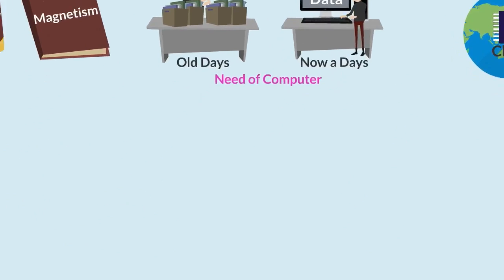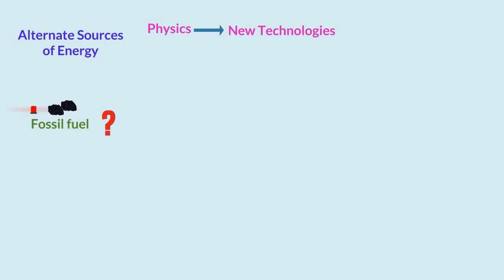Yet another example is the development of alternate sources of energy. We all know that fossil fuels will end one day. What will happen after that? From where we will derive our energy requirements? Physics have answer to these questions. Physics generated new technologies. These technologies convert the energy from alternate sources into usable form.